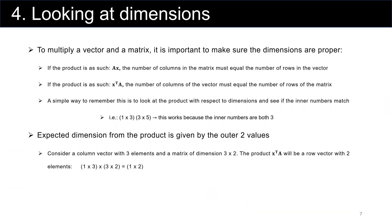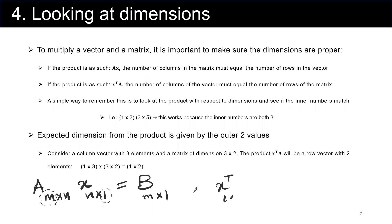The general rule is: matrix A, m by n, multiplied by vector x, n by 1, gives result matrix B, which is m by 1 — the outer values. It also holds the other way: vector x-transpose, which is 1 by m, multiplied by matrix A, which is m by n. We confirm the inner values match, and the result is vector B with dimension 1 by n.